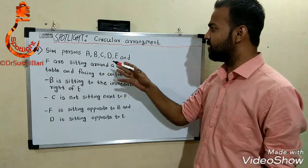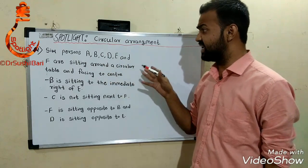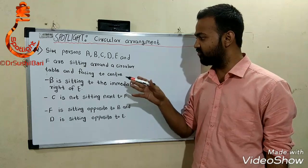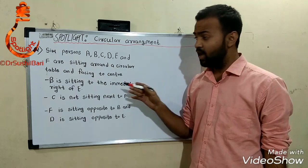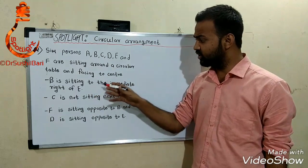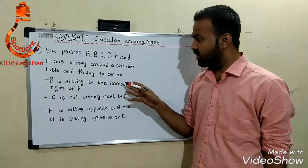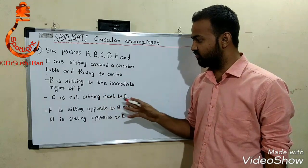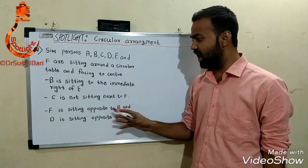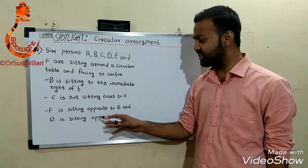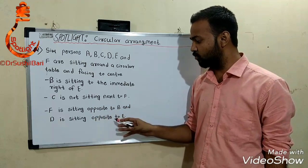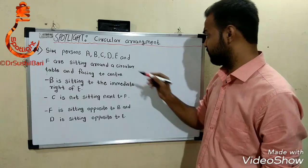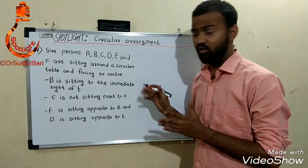The question is: six persons A, B, C, D, E, and F are sitting around a circular table and facing the center. B is sitting to the immediate right of E. C is not sitting next to F. F is sitting opposite to B and D. C is sitting opposite to E.